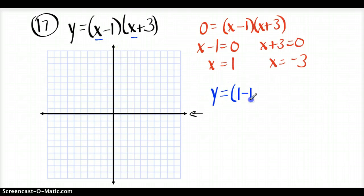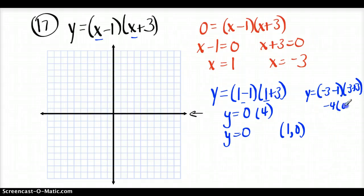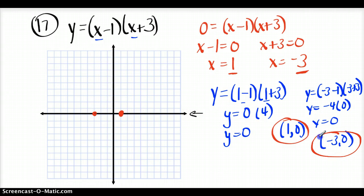If we put 1 in for x, we get 0 times 4, which equals 0, so the ordered pair is (1, 0). If we put negative 3 in for x, we get negative 4 times 0, which is 0, so the ordered pair is (-3, 0). So (1, 0) is an x-intercept and (-3, 0) is an x-intercept.